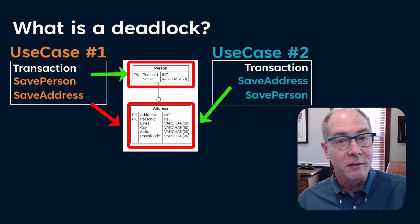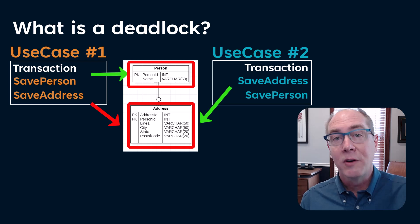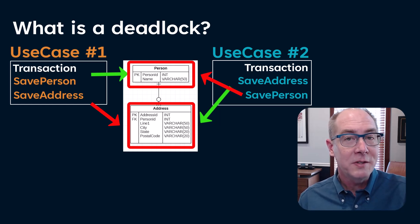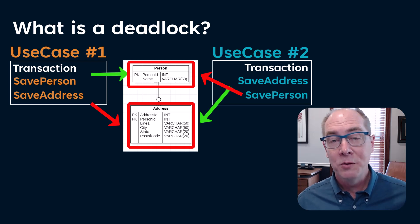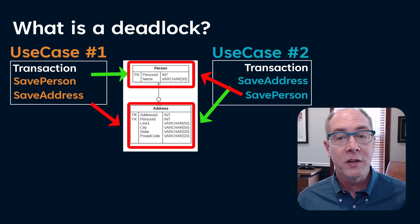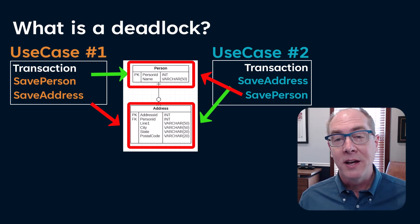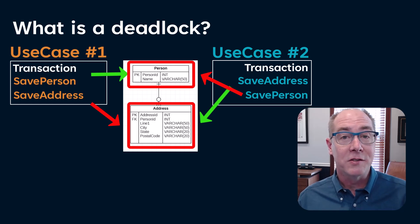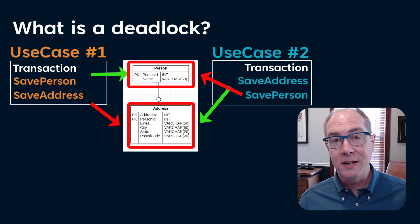Use case one is going to be blocked and will have to wait until use case two finishes its transaction. But use case two tries to save the person record and finds that use case one has it locked — so it's blocked by use case one. Now we have two use cases blocking each other, and that's what a deadlock is. They won't complete until SQL Server decides that one of the two use cases is going to be the victim. Whoever's the victim, that transaction gets rolled back and the other is allowed to complete. The problem is that takes time, so your application waits for SQL Server to resolve the deadlock.